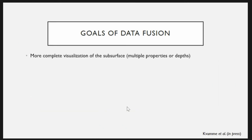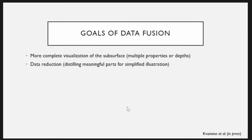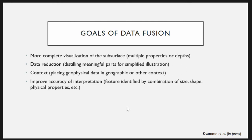The goals of data fusion are trying to do a number of things. First, to make a more complete visualization when you have multiple data sets — for example, integrating different properties measured at different depths. Second, reducing the data down to its most important parts, which in most cases are the archaeological features. Third, putting things in context — simply placing your data into a broader geographic context and looking at how it relates to landscape features. And fourth, improving the accuracy of your interpretation, since combining data gives you multiple properties and different aspects of shape.